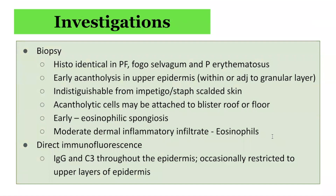In terms of investigations, a biopsy can be considered. Histology can be identical across Pemphigus foliaceus, Fogo Selvagem, and Pemphigus erythematosus. There is a split in the upper epidermis known as acantholysis, which is often indistinguishable from impetigo and staphylococcal scalded skin syndrome, as in these conditions autoantibodies can also be produced against desmoglein proteins. Within the blister there may be acantholytic cells and in some cases eosinophilic spongiosis, as well as a moderate dermal inflammatory infiltrate.